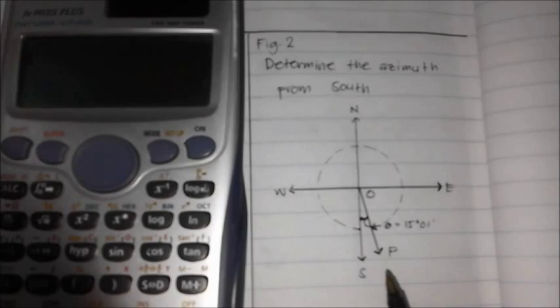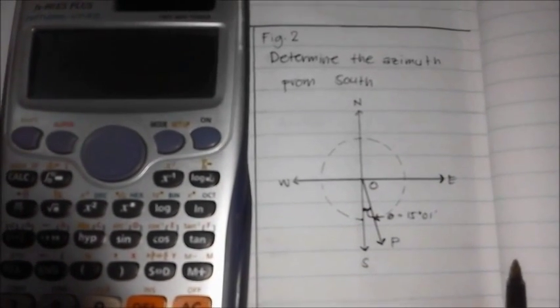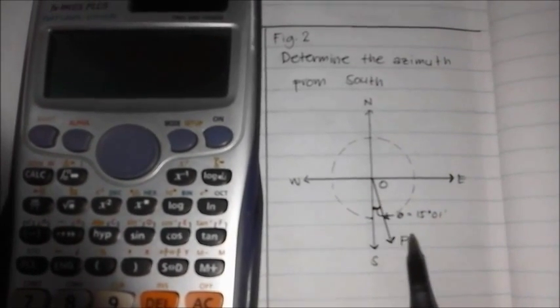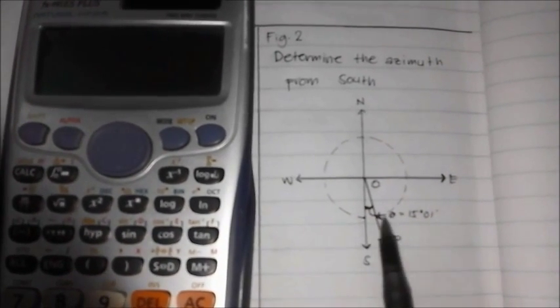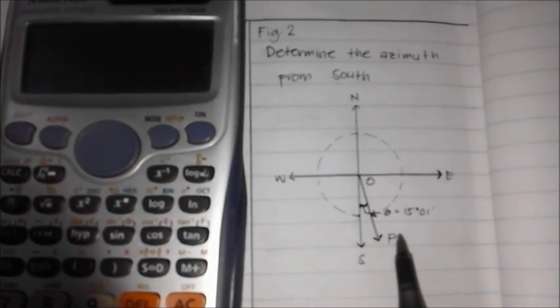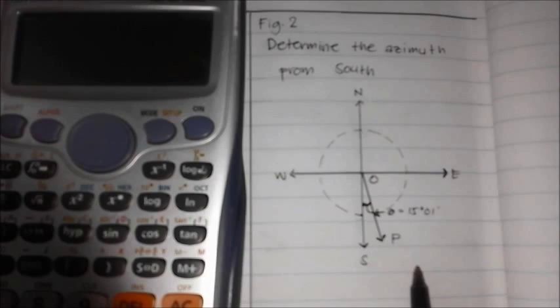Let's go now to the second figure. As we can see, we are determining the azimuth from the south. The line OP has an angle from the south, which is 15 degrees and 1 minute. As we all know, the revolution of a quadrantal system is equivalent to 360 degrees.